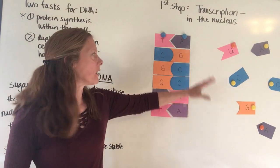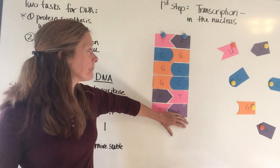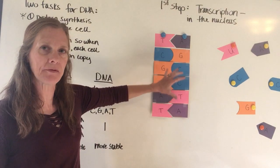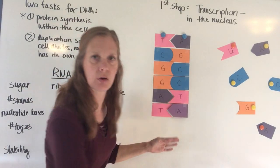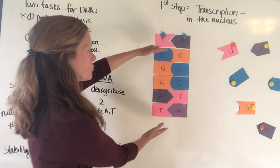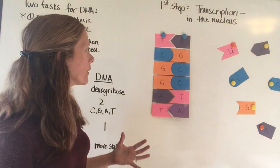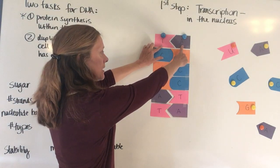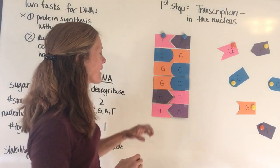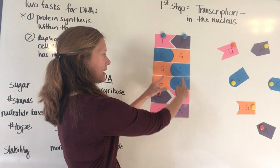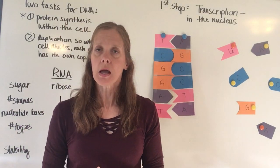In the nucleus of the cell is where your DNA is. What I have here represents a small portion of a DNA strand — a real DNA strand is extremely long. Imagine this strand continuing way up to the ceiling, down to the floor, curving all around the room. This is just a very small piece of that very long strand.